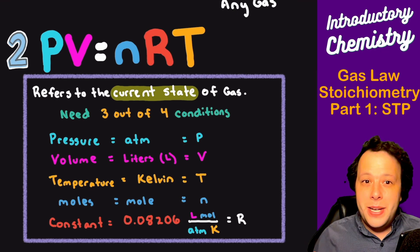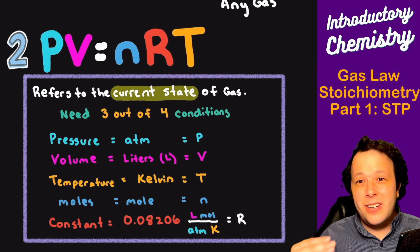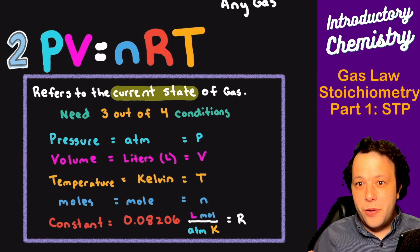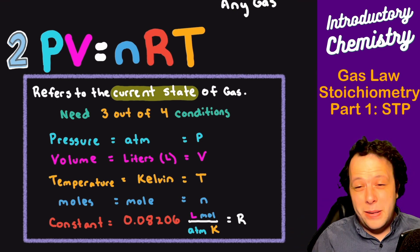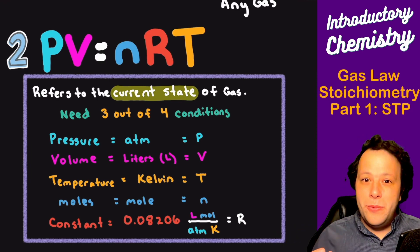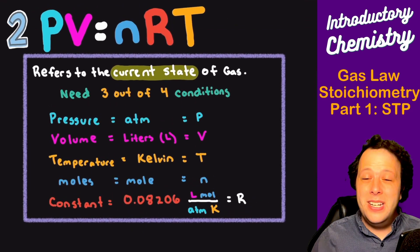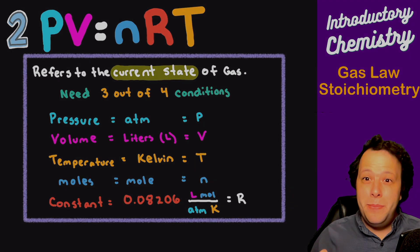The big thing about this is you have four different variables: pressure, volume, temperature, and moles. You need three out of four of these to be able to use this formula. Generally you're always given three out of the four. So when we are looking at these, we are going to be exploring all the different formulas in many different problems. Let's take a look at how to use these, starting with STP.